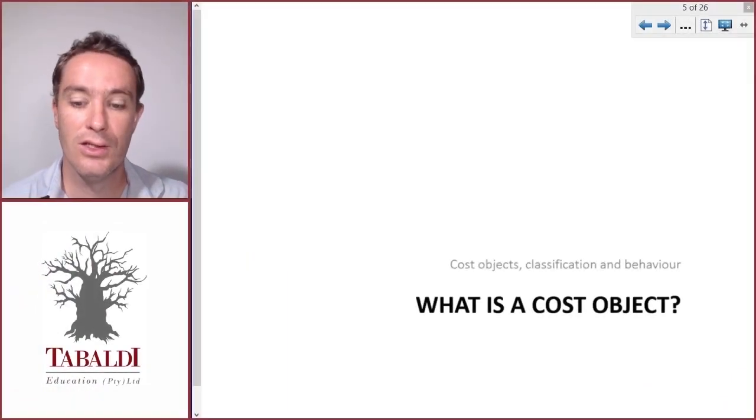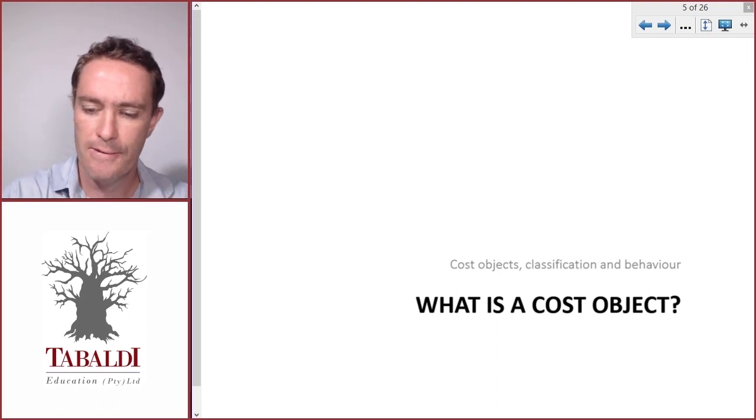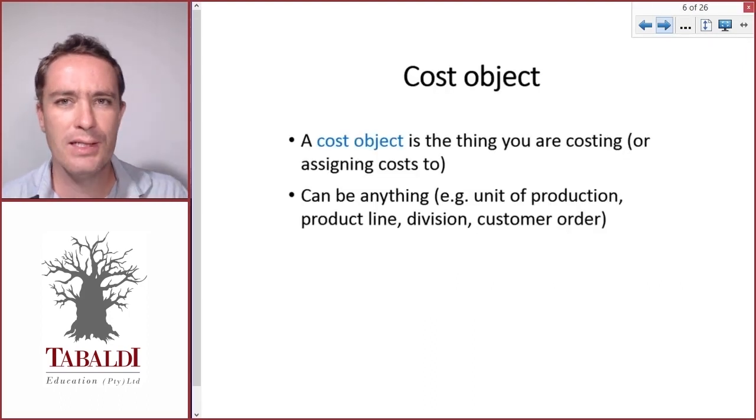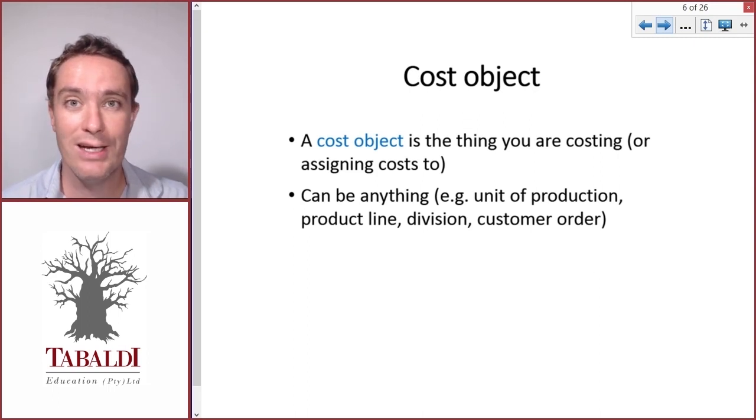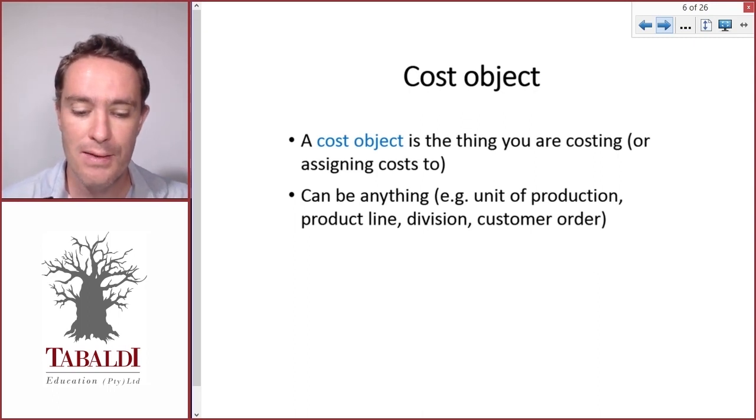Let's have a look at the term cost object. Cost object is one of the terms in management accounting that's vitally important for your understanding of further topics, but it's easily overlooked. A cost object is simply something you're trying to cost or calculate the cost of.